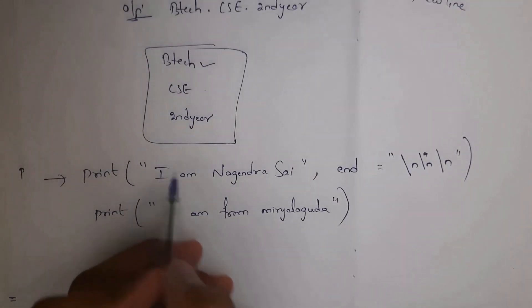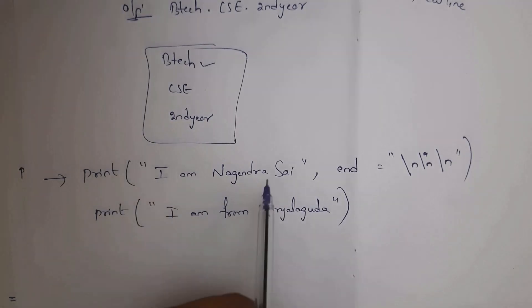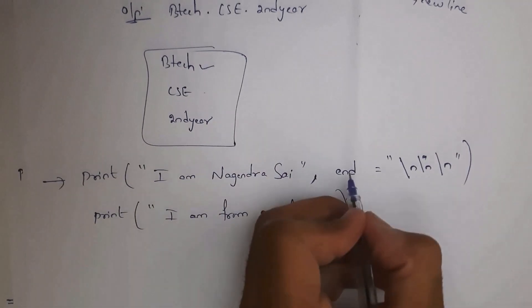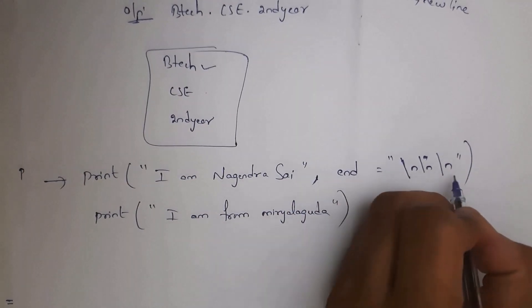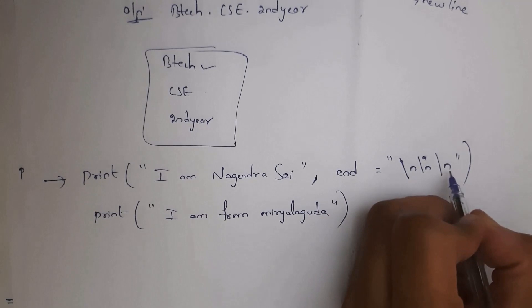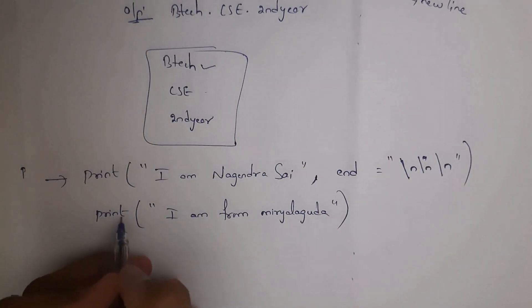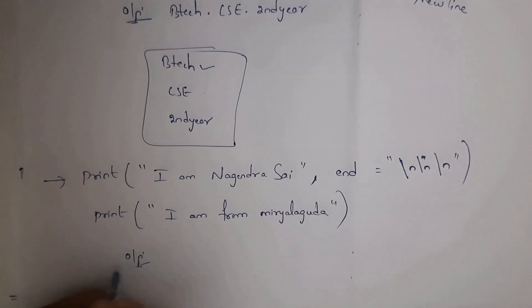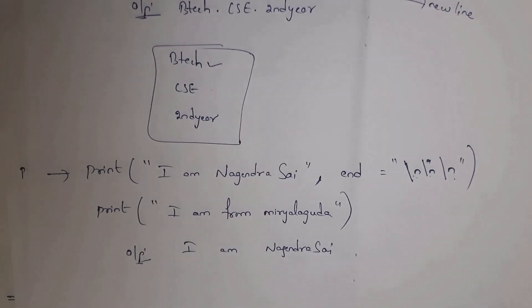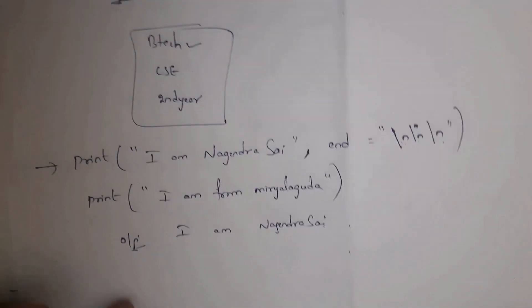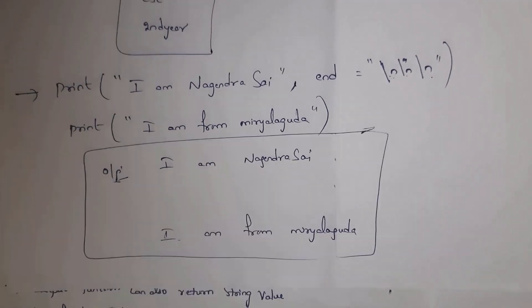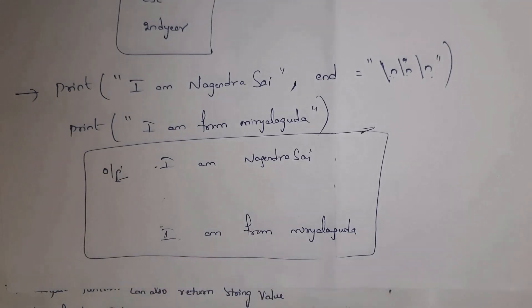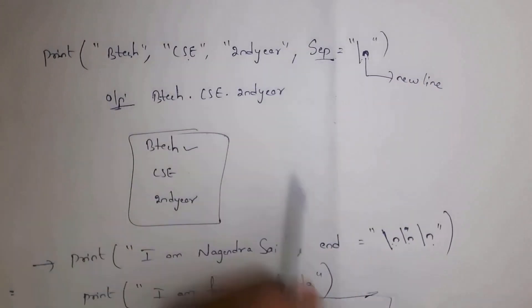Here inside print I've written 'I am Nagendrasai', then end='\n\n\n'. After that I have another print statement: 'I am from Miriyalagoda'. When you execute this program, after printing 'I am Nagendrasai' there will be three lines of gap, then 'I am from Miriyalagoda' is printed. This demonstrates the use of the end parameter in the print function.